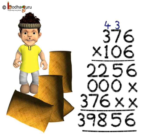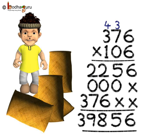Next, we multiply by 1, and it is simple. Since 1 is at the hundreds place, we put 2 crosses. Now, 1 six is 6, 1 seven is 7, 1 three is 3. Lastly, we add all the rows starting from the ones place. Next, 2 plus 7 is 9. Lastly, 3. So we get 39,856 as the answer.